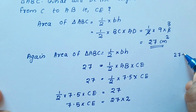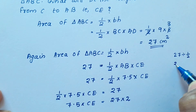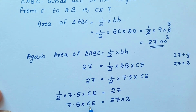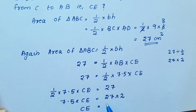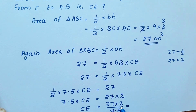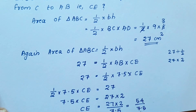CE equals 27 divided by 1/2, that is 27 into 2, divided by 7.5. This gives us 54 divided by 7.5.